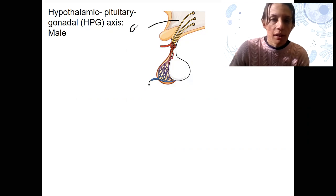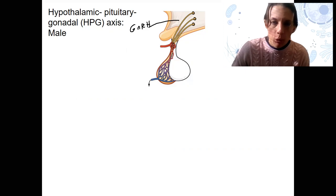So for the HPG axis, this is GnRH. You should be sick of this by now, I hope. I don't really hope.